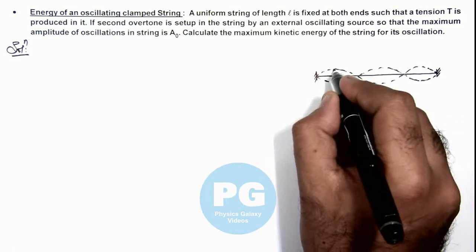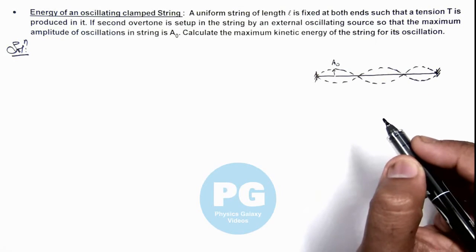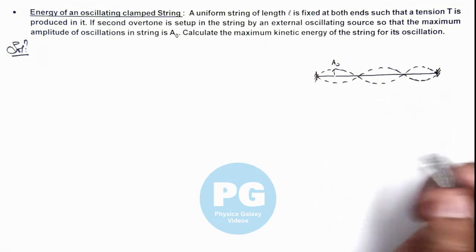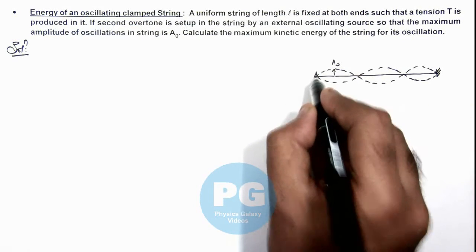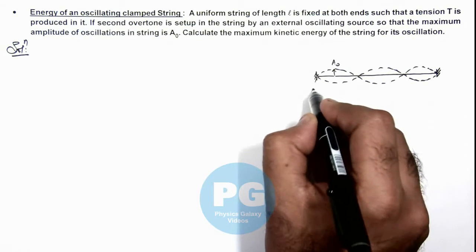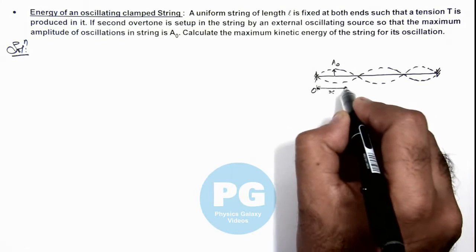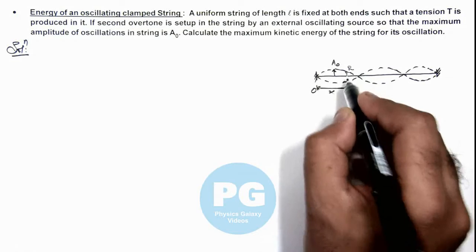And the amplitude of antinode is given to us as A₀. And as we are also given that the tension in string is to be taken as T, so here we can write if the left end is considered an origin then at a distance x from this clamp, if the amplitude of oscillation of a particle is R we can write,